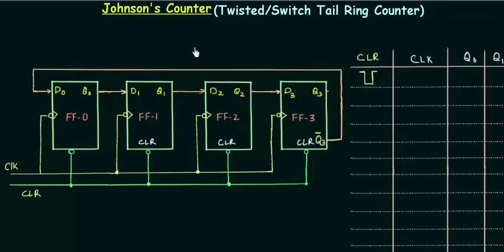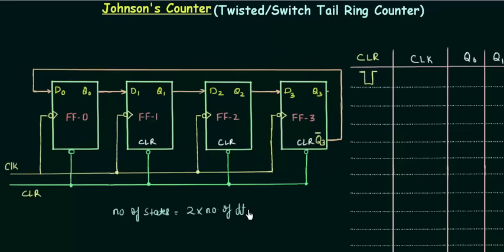If I compare these two counters, the Johnson's counter is much better than the ring counter we studied in the last presentation. I have two reasons for it. The first one is the number of states. In the ring counter, the number of states equals the number of flip flops used — we used 4 flip flops so we had 4 states. But in Johnson's counter the number of states is equal to twice the number of flip flops. So if I use 4 flip flops I will have 8 states — double compared to the previous case.